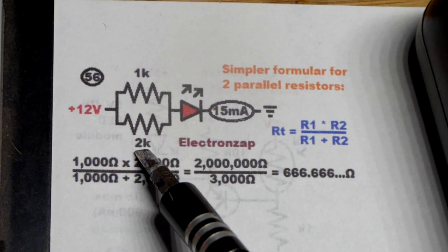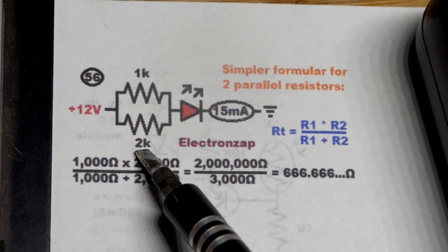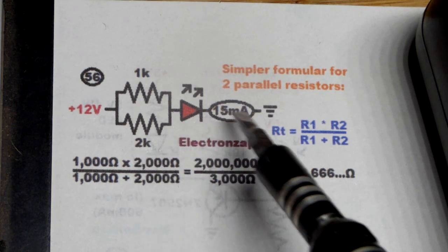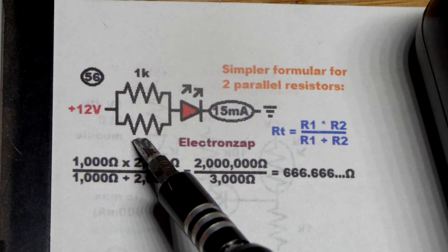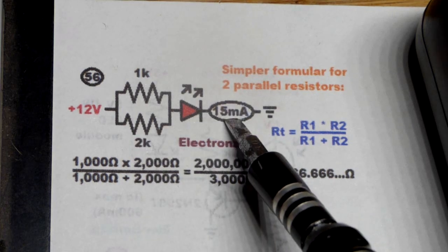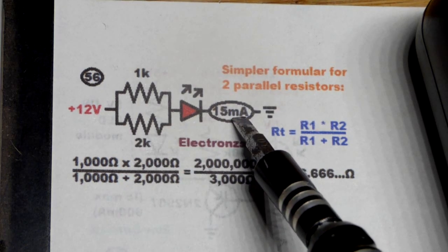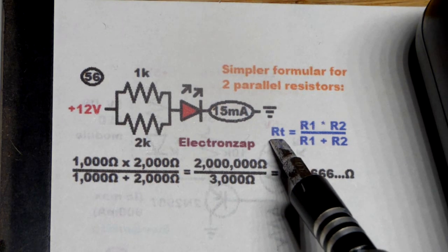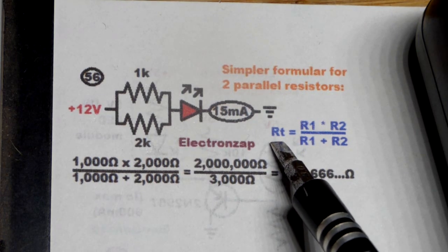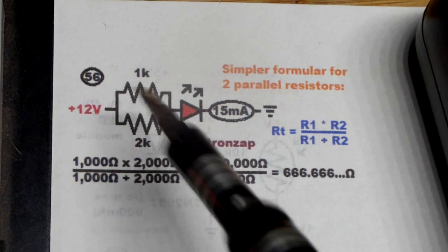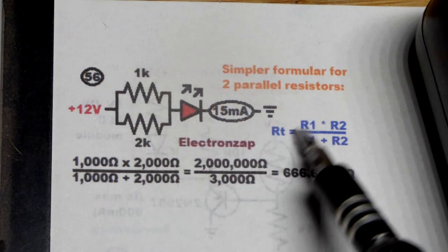Again, the actual resistor I'm using is 2,200 ohms. That's its rated value. So it's going to provide a little bit more resistance. So a little less current as we saw before. But yeah, there you take the total resistance to calculate what they would be if we were using a 1,000 and 2,000.